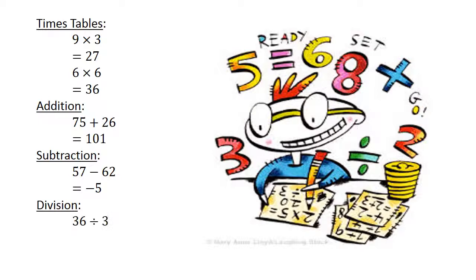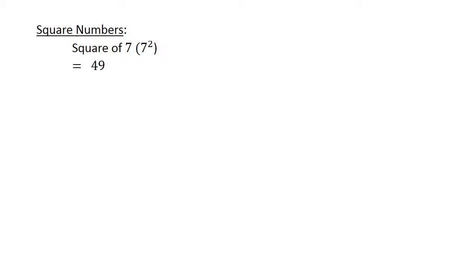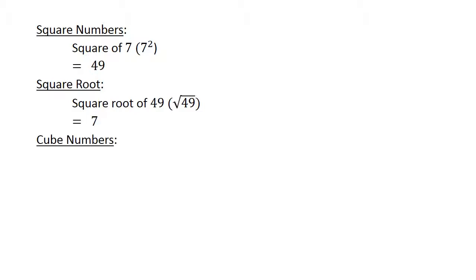Division: 36 divided by 3 equals 12. Square numbers: the square of 7 equals 49. The square root of 49 equals 7.